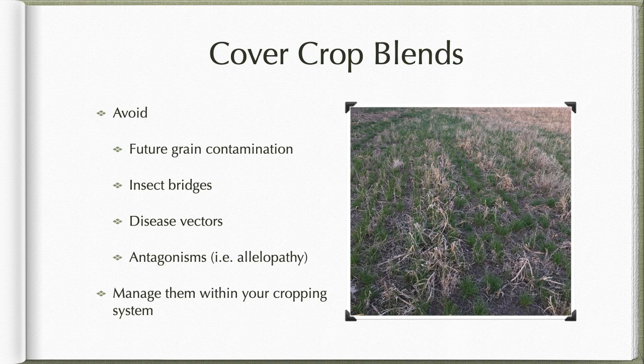We also want to avoid insect bridges. If a producer is growing wheat and canola — and I don't consider that a rotation, just an oscillation — and they want to grow radishes to break up that hard pan: if they grow radishes after canola, flea beetles will eat the radishes. If you grow the radishes after wheat, flea beetles may be at low levels, but they'll overwinter in the radish residue and then be there to eat your canola. That's the insect bridge.